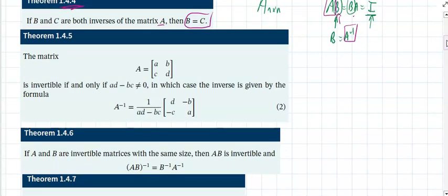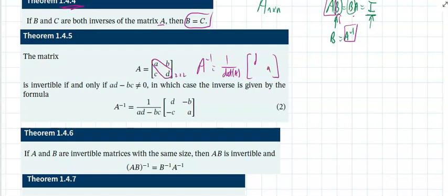Here's a shortcut specifically for 2×2 matrices to find the inverse. The inverse of matrix A, denoted A⁻¹, is one over the determinant of A multiplied by a modified matrix where you swap the diagonal entries and multiply the off-diagonal entries by a negative. The determinant of A is simply the product of one diagonal minus the product of the other diagonal.